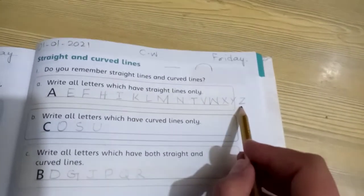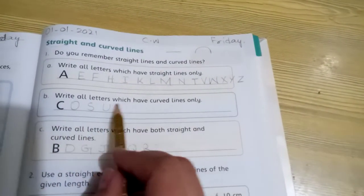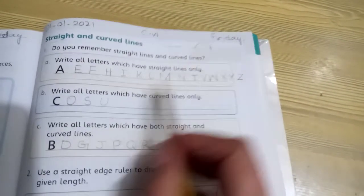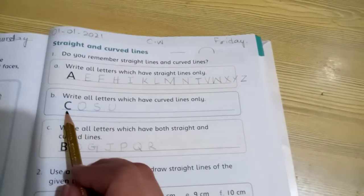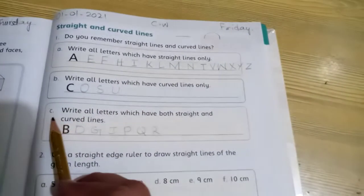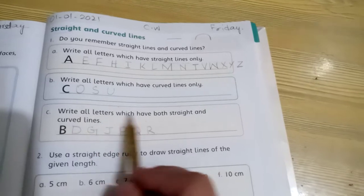Now part B: write all letters which have curved lines only. These are C O S U. In case of curved lines, in me C O I straight line, right?